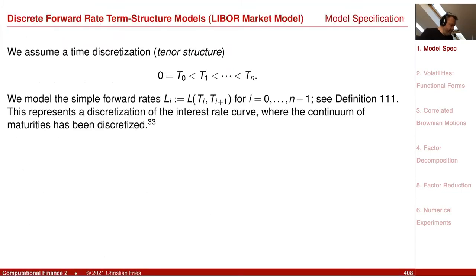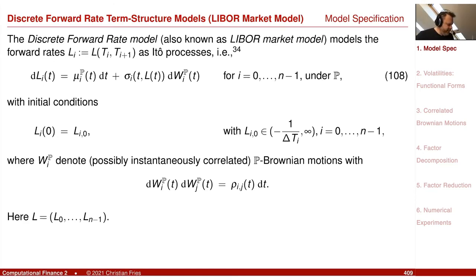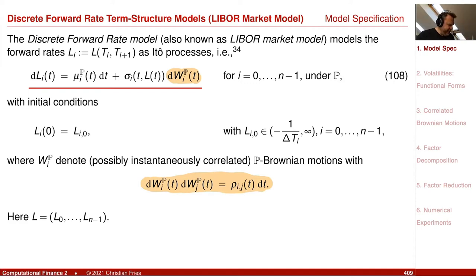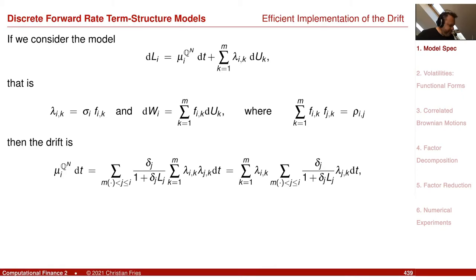Our model was an Itô process for the forward rate. We specified the model in two different versions. In one version, every forward rate has its own Brownian driver, and the Brownian drivers could be endowed with an instantaneous correlation. Another version introduced a bit later used a more efficient formulation of the drift term, where the Brownian driver is decomposed into independent factors — the DU_k.